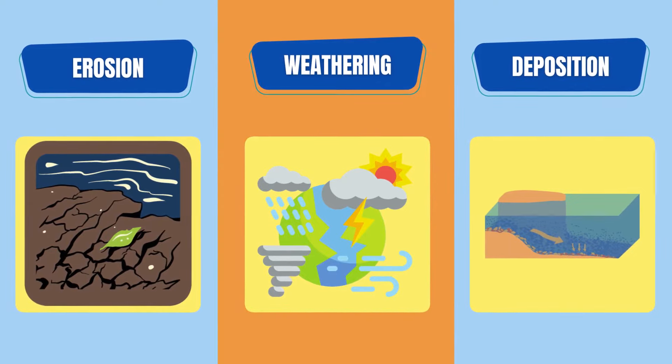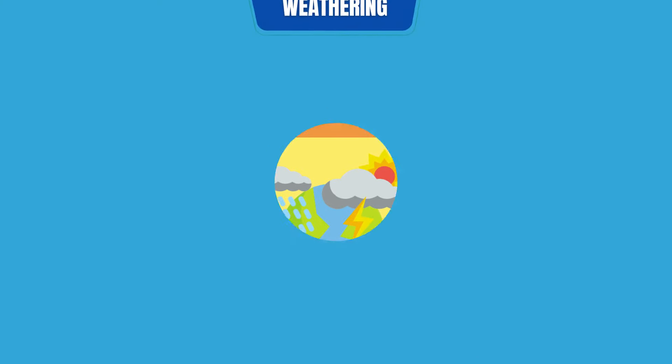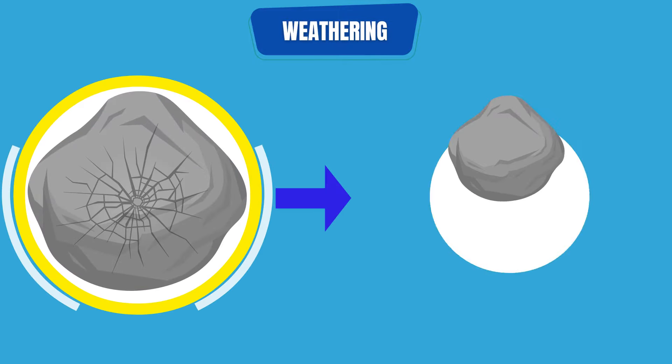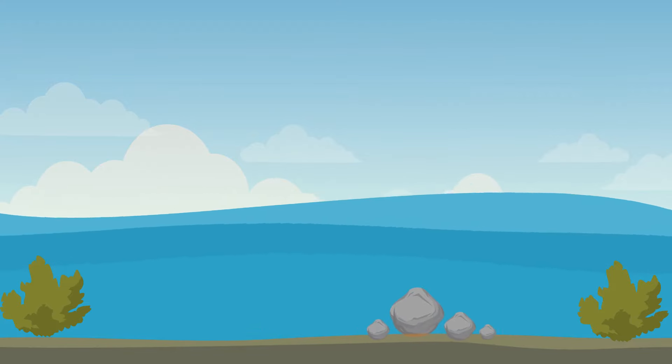But what exactly is weathering, erosion, and deposition, and how are they connected? Weathering is a process of rocks being broken down into smaller rocks. Erosion is a process by which sediments and other materials are moved from one place to the other.